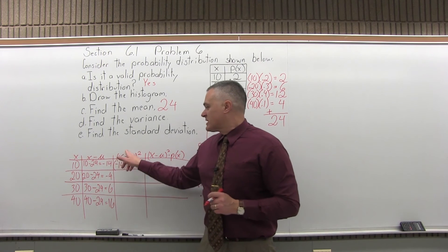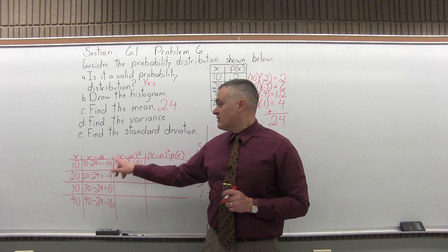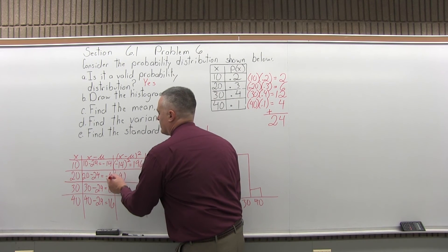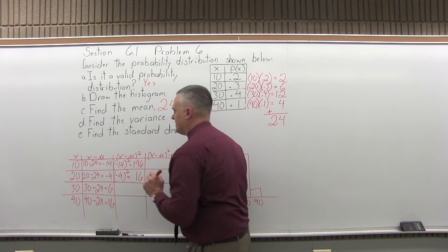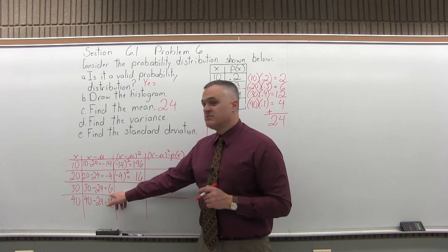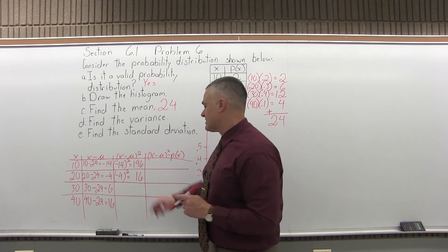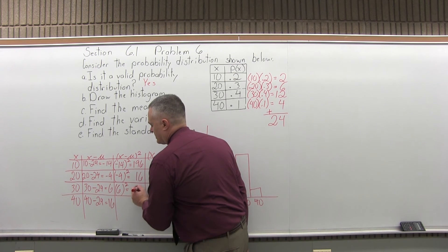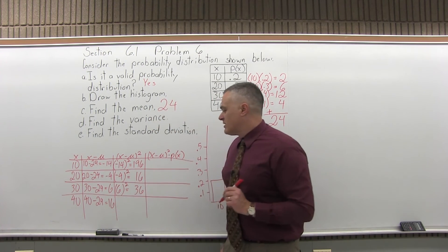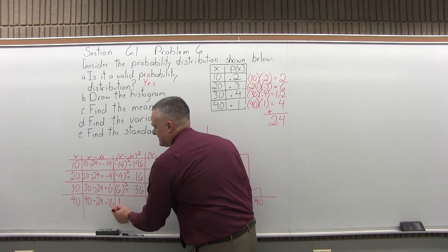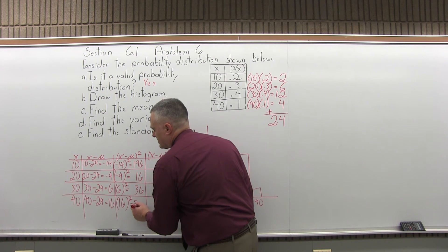So now as we go to the next column, you're going to take the answers that we got for x minus μ and raise them to the second power. In the top row, the answer for x minus μ is negative 14. So we'll do negative 14 squared, negative 14 times negative 14 is positive 196. Again, notice the negatives cancel. The second row, the answer for x minus μ was minus 4, so raise minus 4 to the second power, and that will be minus 4 times minus 4, which is positive 16. And now in the third row, the answer for x minus μ was 6, so we'll do 6 to the second power, which will be 6 times 6, which gives us an answer of 36. And finally, the bottom row, the answer for x minus μ was 16, so we'll do 16 squared, which is 16 times 16, which is positive 256.